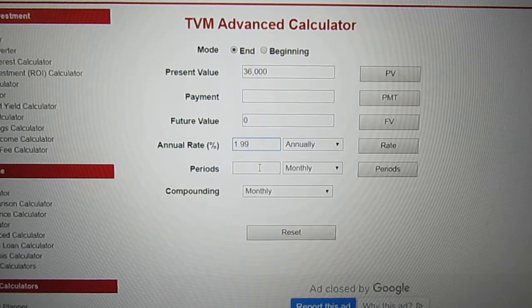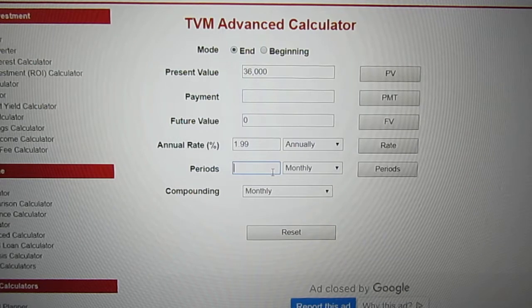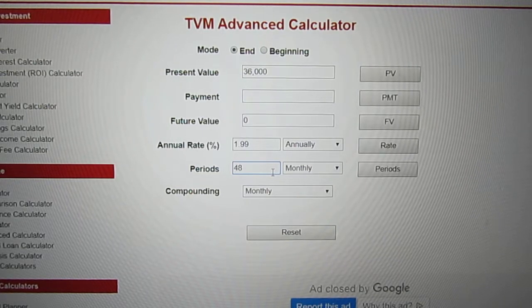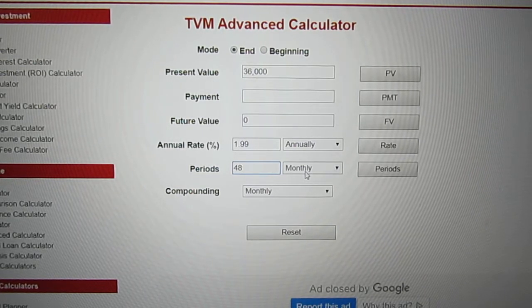But the periods, it said that it's four years monthly payments. So this day is monthly, four years monthly payments, so 12 times 4, that's 48 total payments which are made monthly.